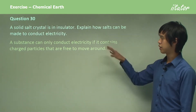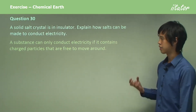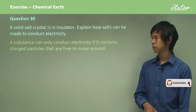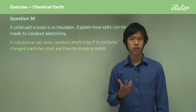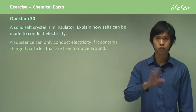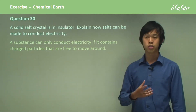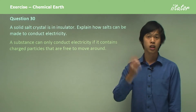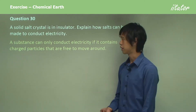A substance can only conduct electricity if it contains charged particles that can move around. So in a metal, you have charged particles in the form of electrons, and they're free to move. And in any substance, as long as there are charged particles and they're free to move, you can conduct electricity.